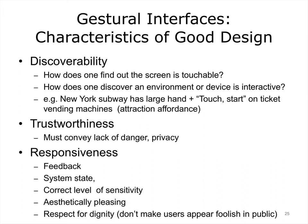Some of the characteristics of good design for gestural interfaces are discoverability, trustworthiness, and responsiveness. Discoverability means whether or not a new user can discover the capabilities of the interface, including the fact that it is an interface responsive to gestures. Sometimes this may have to be conveyed explicitly via an attraction affordance, that is, a sign, diagram, or other means of telling people unfamiliar with it that this has an interface. An example is the New York subway ticket vending machines, which are touchscreens. A large hand and the word 'touch and start' show inexperienced users that this is a touch screen and how to start interacting.